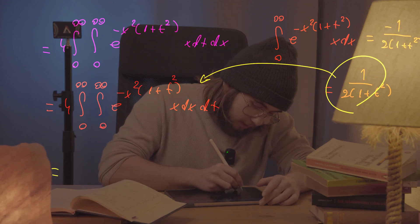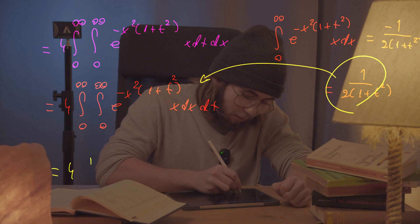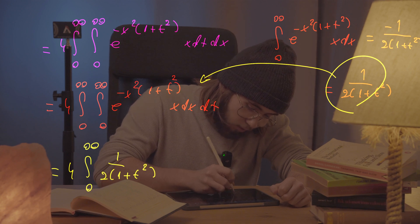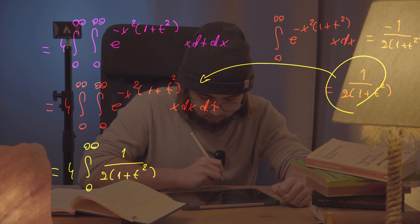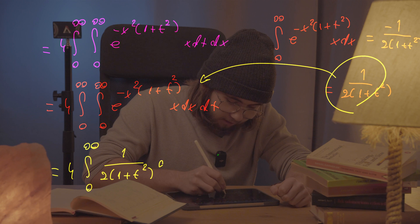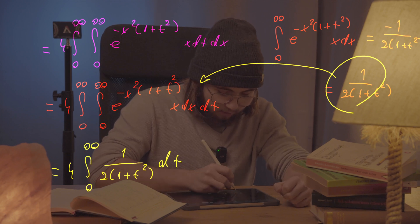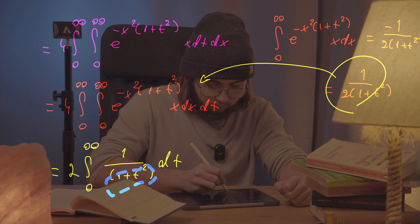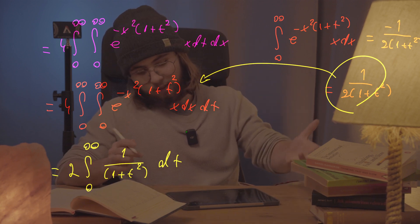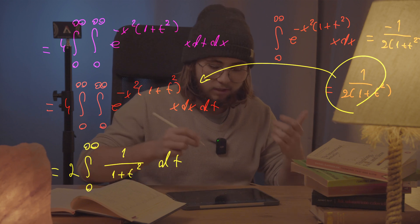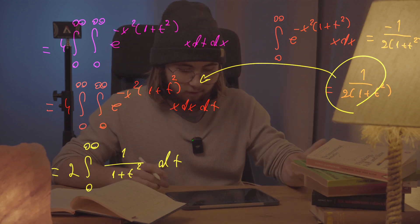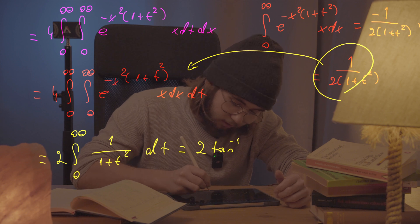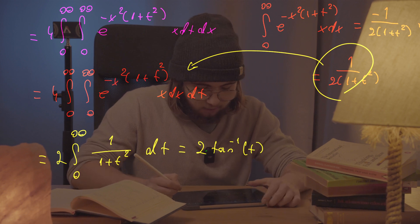Plugging back in, we get four times the integral from zero to infinity of one over 2(1 plus t squared) dt. Taking out the one-half cancels with the four to give two times the integral from zero to infinity of one over (1 plus t squared) dt. The integral of 1 over (1 plus t squared) is the arctangent of t.